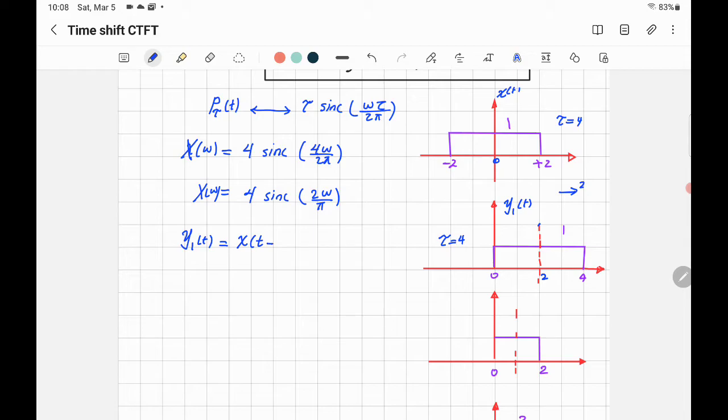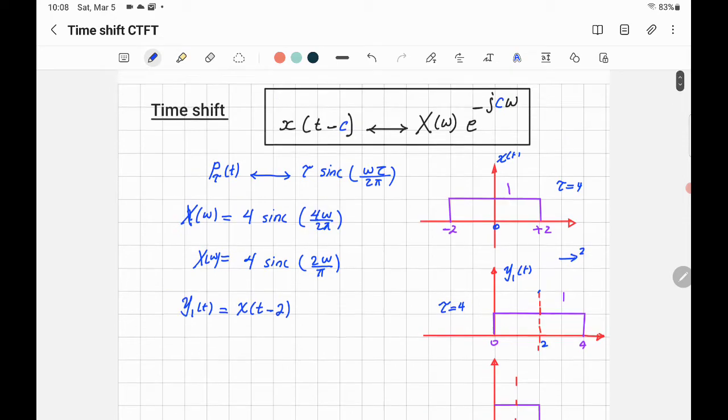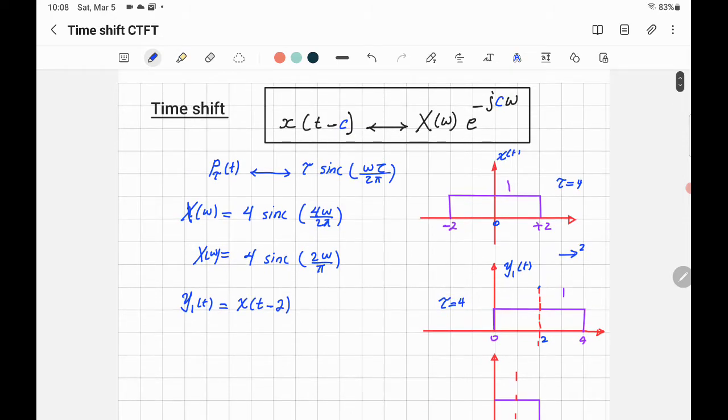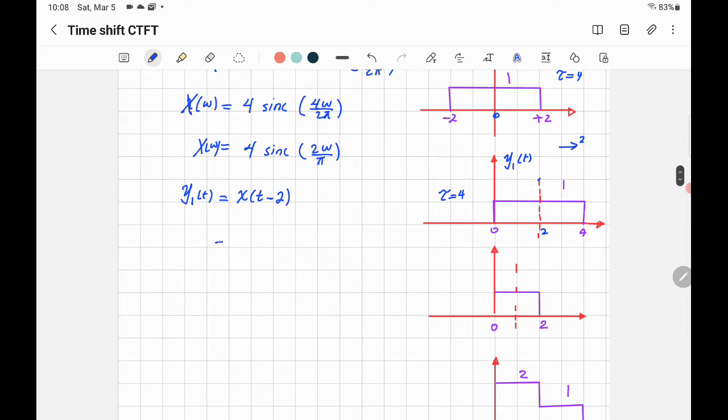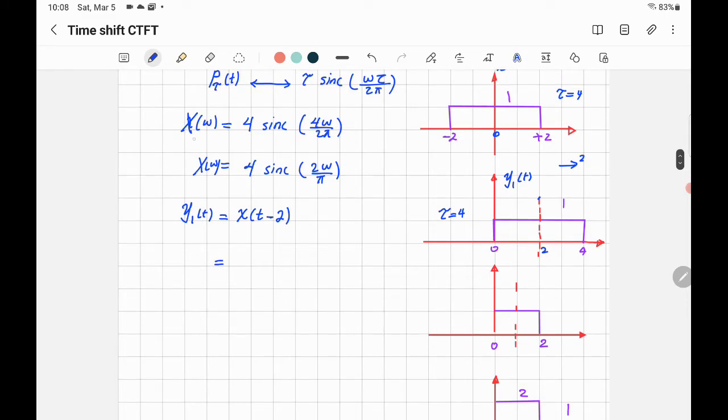Except it will be minus 2. Why? Because Y(t) is shifted by 2 units towards the right. According to the rule that we have here for the time shift, we are going to find X(ω). So X(ω), we already got it, that's X(ω).